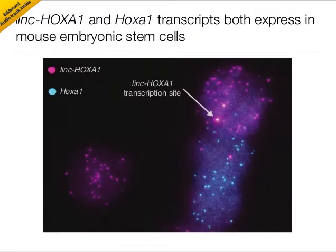Our primary interest was seeing if lincHoxay1 can regulate gene expression. In particular, we wondered if it regulated nearby genes in the Hoxay cluster, like Hoxay1. So we initially co-stained for lincHoxay1 and Hoxay1 at the same time in individual cells. Here you can see the lincHoxay1 transcript in purple, and the Hoxay1 transcript in blue. That brighter spot you see there is actually a nascent site of transcription in the cell's nucleus. When the gene turns on, you'll get a burst of transcription, and the nascent pre-RNA tend to hang around the site of transcription a bit, giving you that bright spot. These transcription sites will figure in more later.